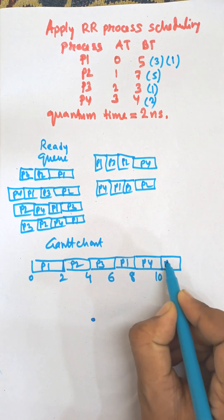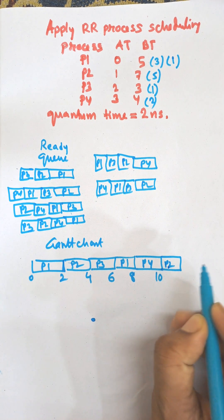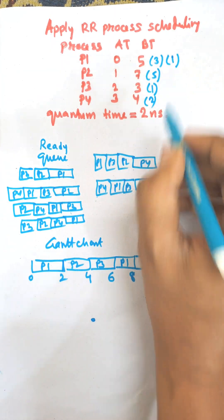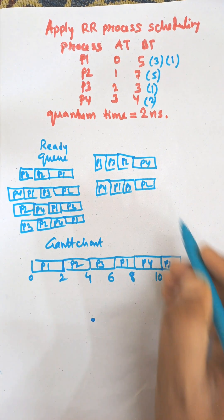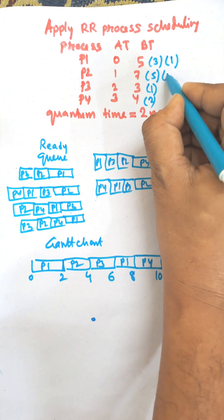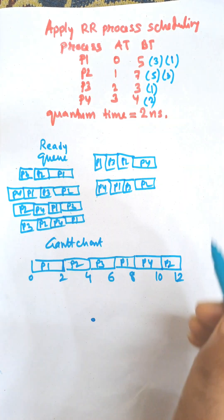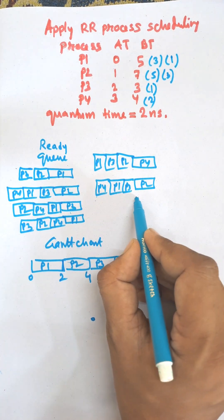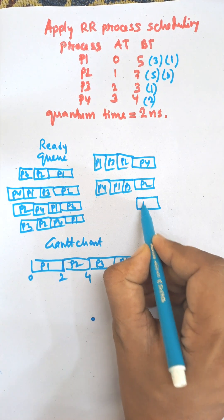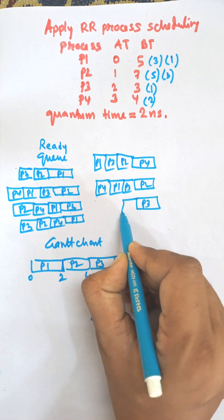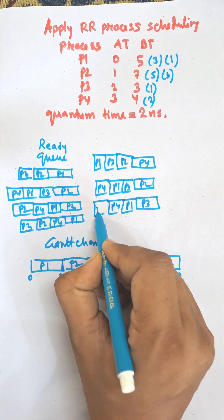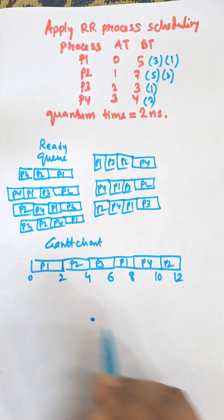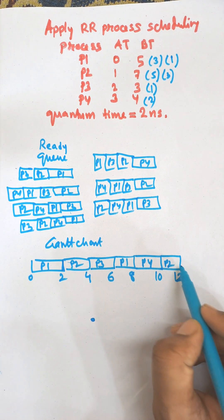Control goes to P2. Remaining time for P2 is five, so it will execute for two, remaining time becomes three. The queue order is P3, P1, P4, P2, and P2 goes to the end of the queue.